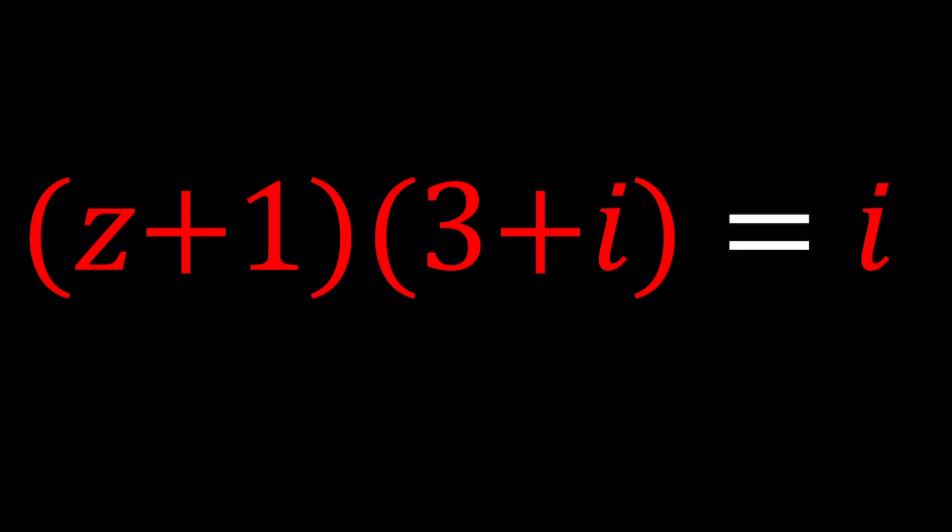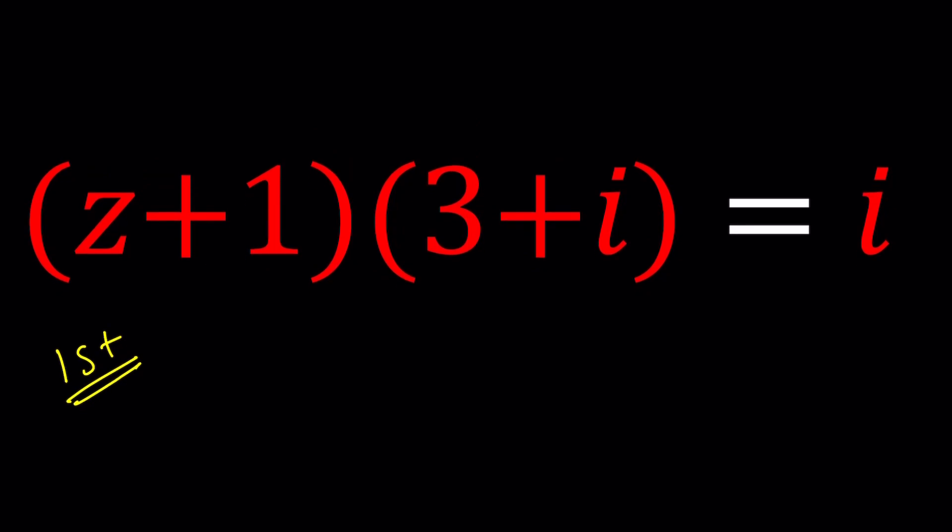So I'll be presenting three methods, and the first method is called something that you should not be doing most of the time. This is how you do not solve this problem, okay? But I still want to show you. So Z is a complex number, therefore I can just replace Z with A plus B I. A plus B I plus 1 multiply by 3 plus I equals I,